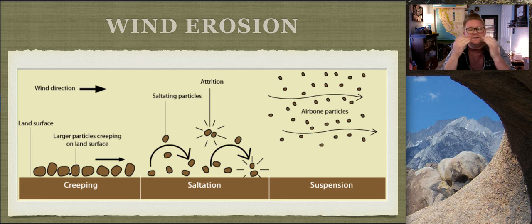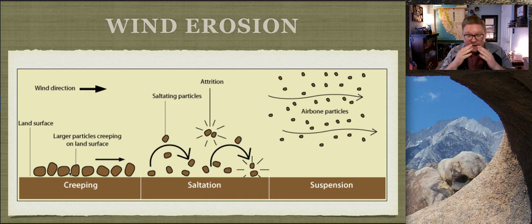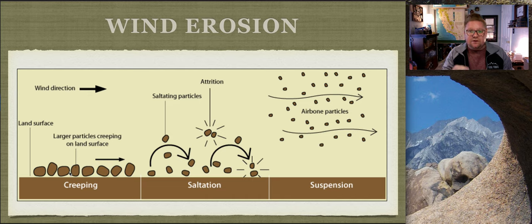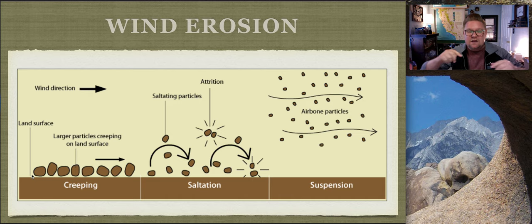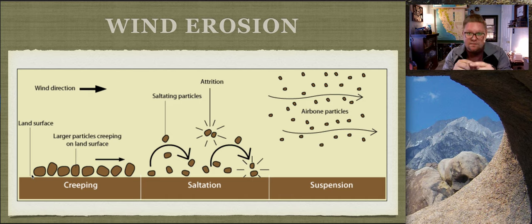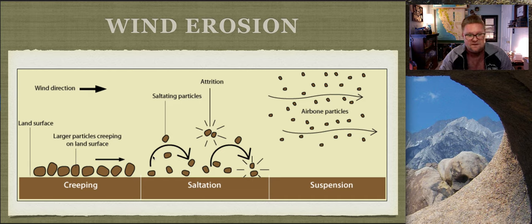If you had a straw and a box with sand and blew air onto it, some material would be really large - too big to pick up and fly away - so it would just roll along the bottom, creeping very slowly along the surface.